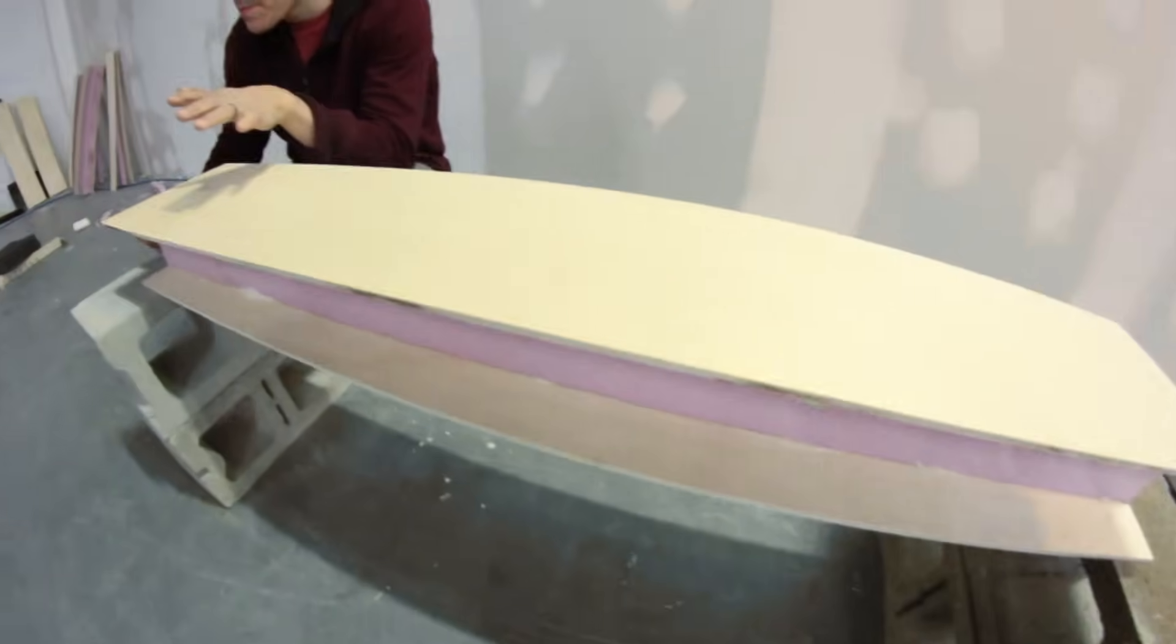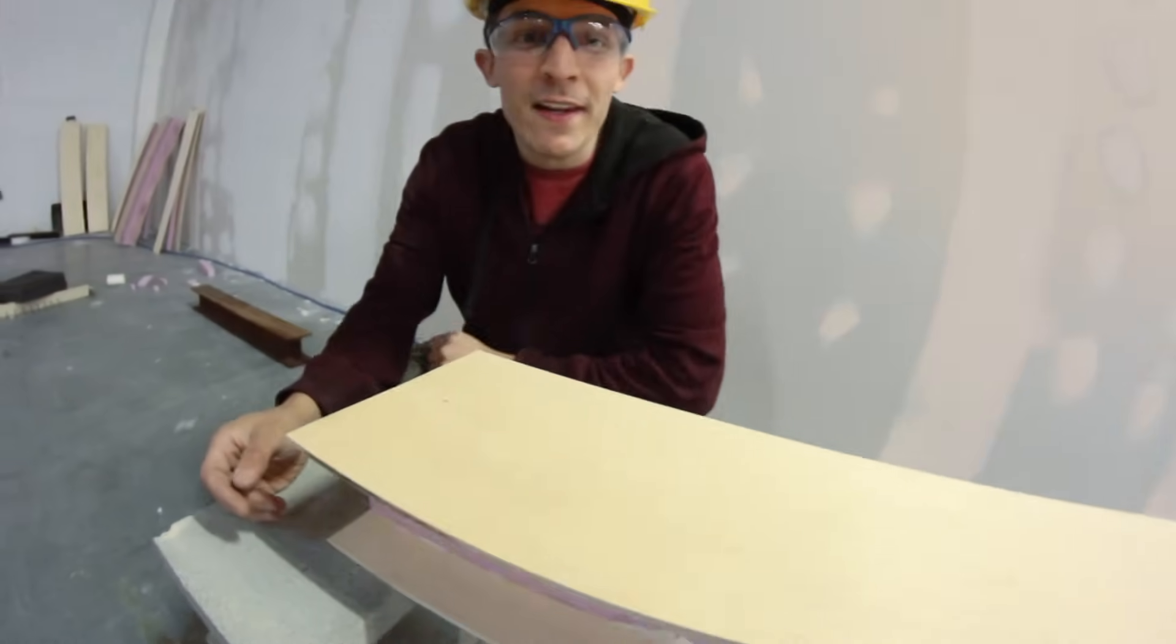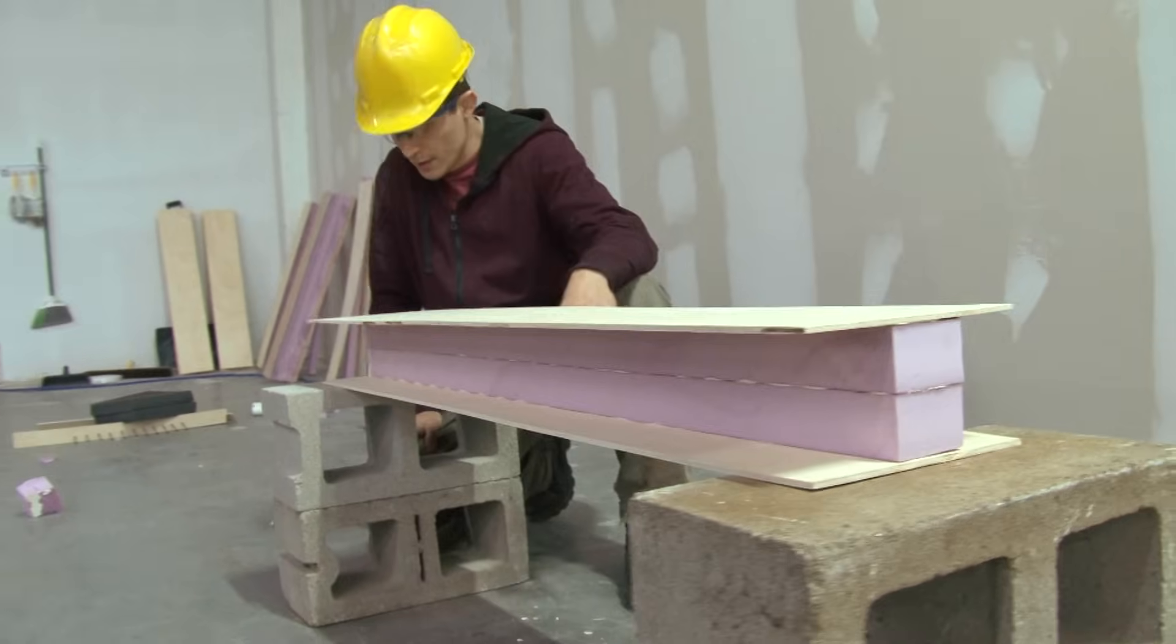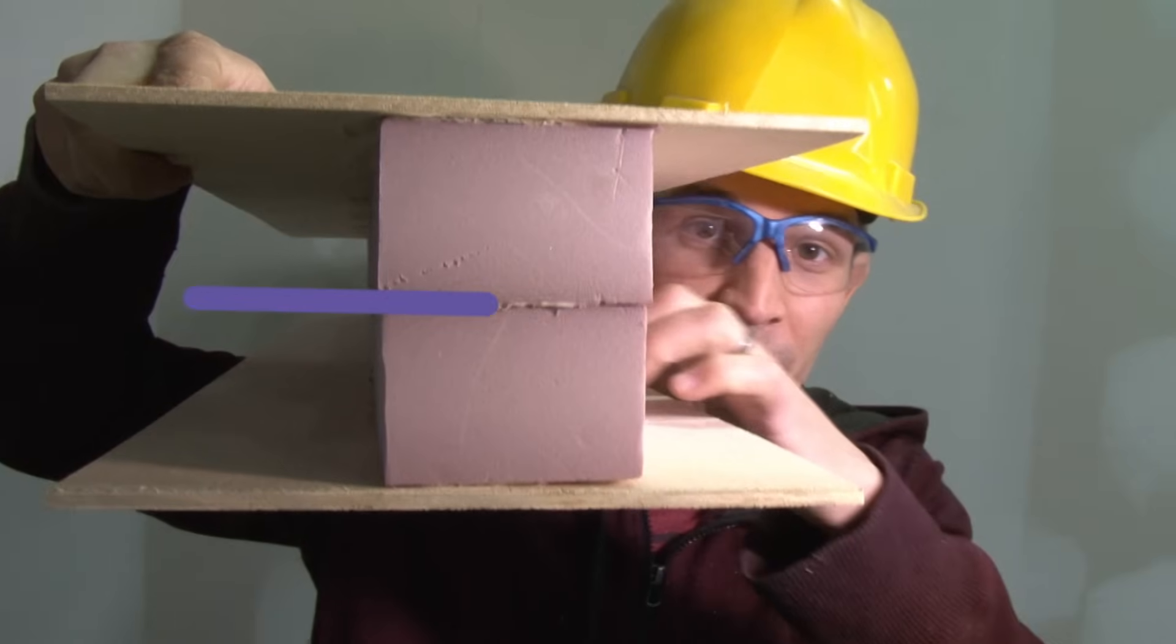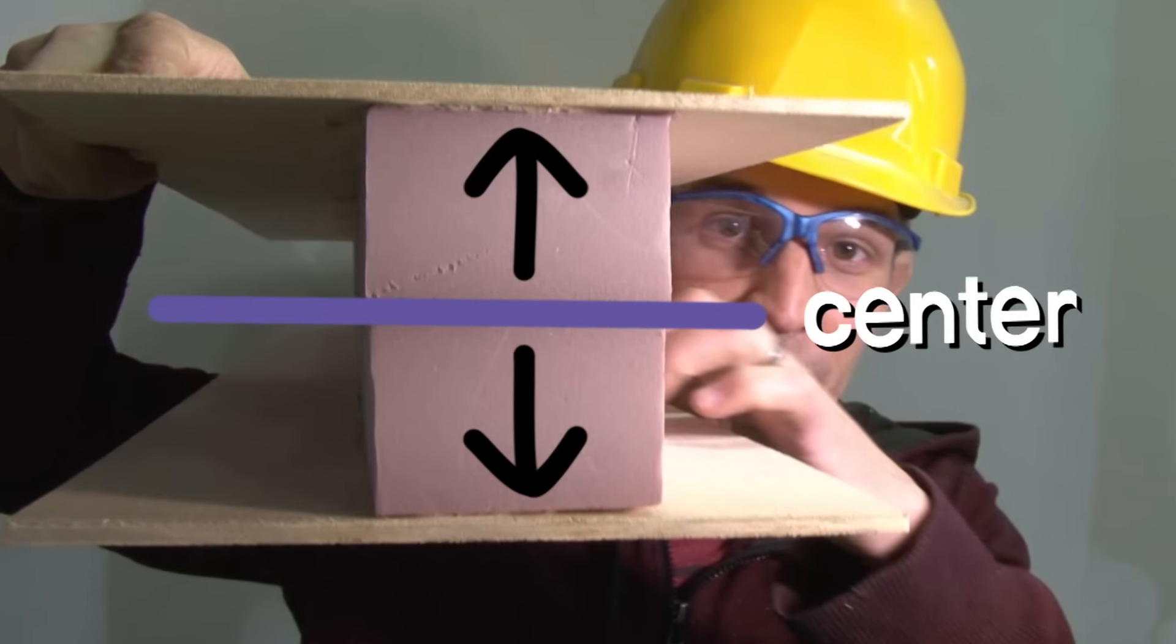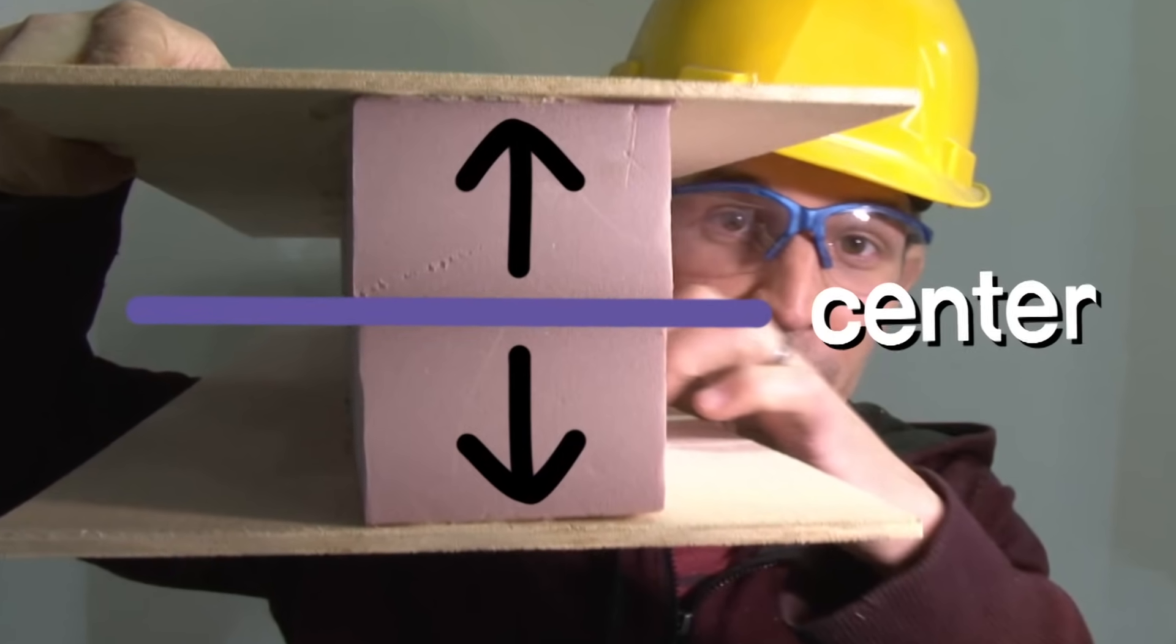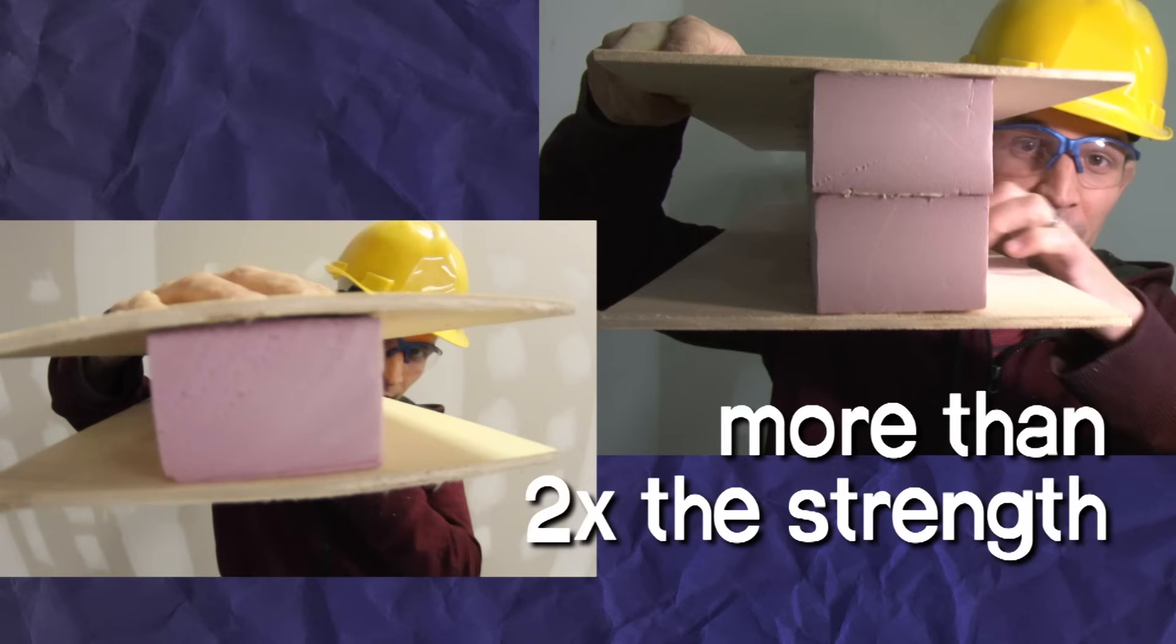So what I've done here is built up the same beam, same amount of plywood on the top and the bottom, but I double the thickness of the styrofoam in between. The further out the top and the bottom are from center, the more leverage they get to resist that load. That geometry is so valuable that when you double the height, you can get more than a double increase in the strength.